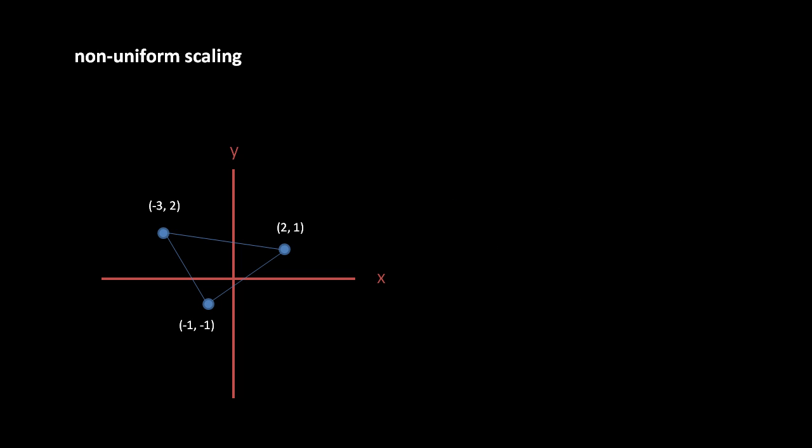In other cases, we might wish to scale an object non-uniformly, such that the object stretches or contracts more along one axis than the other. For example, we might stretch this triangle by a factor of 2 along the y axis, but stretch it by a factor of 1 along the x axis, which is effectively stretching it not at all along the x axis. For this purpose, the y values would get doubled, but the x values would remain the same.